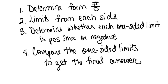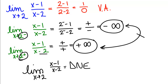In the example we just did: we plugged in and found the form is 1 over 0. Then we split into limits from the left and right. We looked at the top and bottom of the fraction to determine whether each was positive or negative, found the sign for each answer, and put infinity after it. Then we compared the limits from each side. Since they were different, we got does not exist.